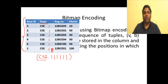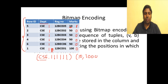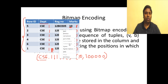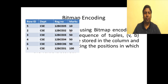Now let's encode the marks column using bitmap encoding. For value 10: present only at position one, so the encoding is 10, 1 0 0 0 0 0. For value 50: present at positions two through five but absent at positions one and six, so the encoding is 50, 0 1 1 1 1 0.